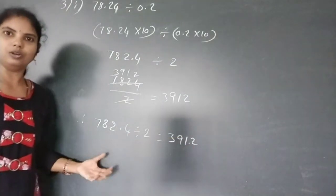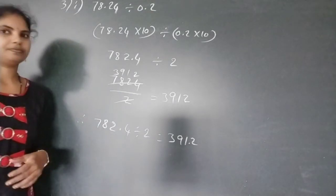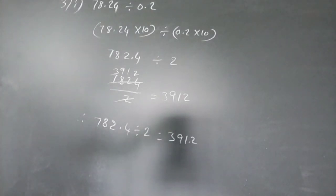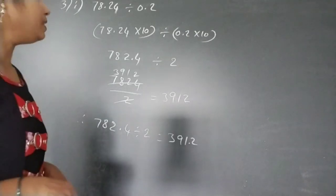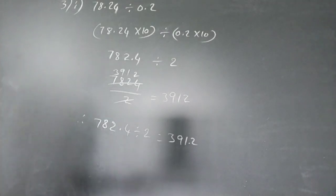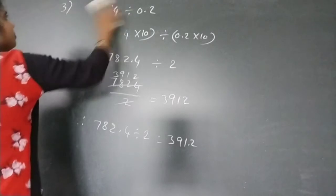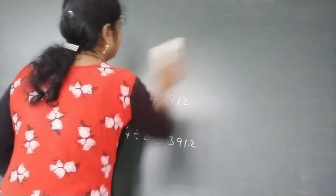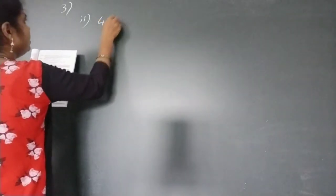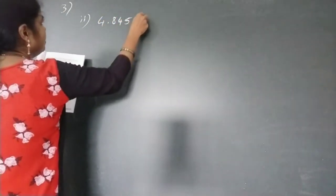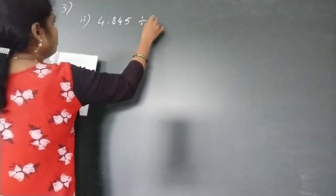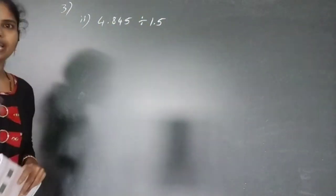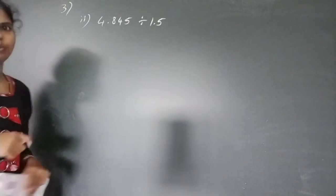Did you understand children? Now for the second sum: 4.845 divided by 1.5.